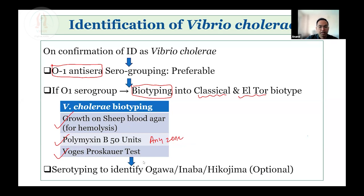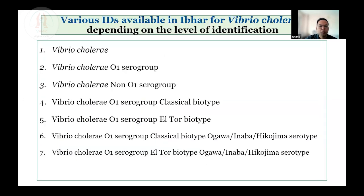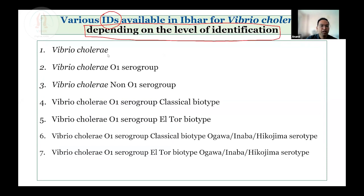If the lab has anti-sera to identify Ogawa and Inaba serotypes, it is recommended to be done but it is not mandated — it's optional. Once identification is complete, we can choose in IBAR the final identity of the organism from a dropdown list. If the organism is tested only by biochemical test, we can identify it as Vibrio cholerae. Labs may require time to enable themselves with anti-sera; they can do anti-sera testing in later entries.